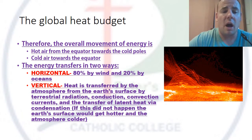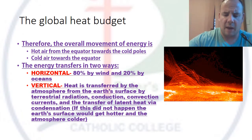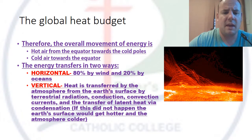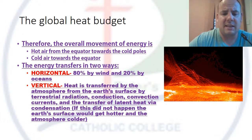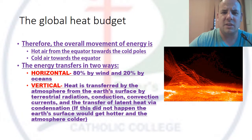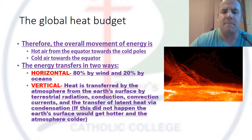Then we have vertical transfer, which occurs within the Earth's atmosphere. This is caused by terrestrial radiation, conduction, convection currents, and the transfer of latent heat by condensation. If we didn't get this heat transfer, the Earth's surface would get hotter and the atmosphere would get colder.